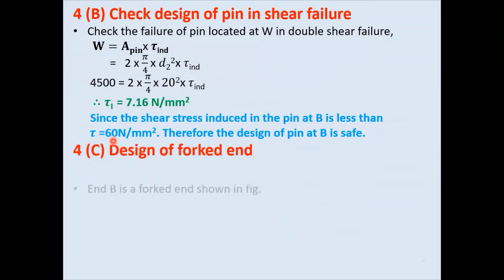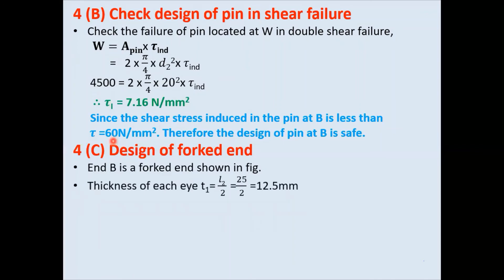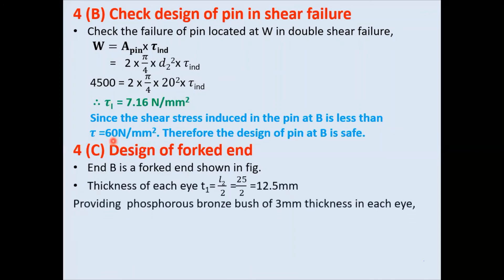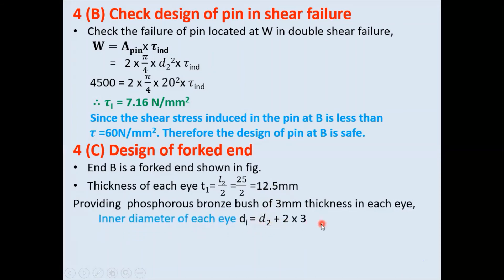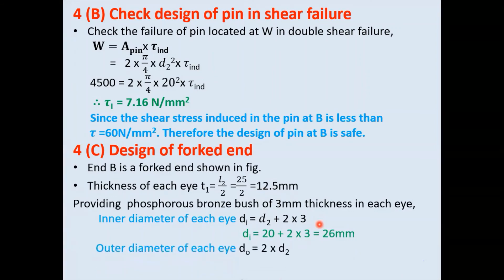Step 4c: design of forged end. Provide a phosphorous bronze bush of 3 mm thickness. Thickness of each eye of the forged end = L2/2 = 12.5 mm. Inner diameter of eye = d2 + 2×3 = 20 + 6 = 26 mm. Outer diameter of eye = 2 × inner diameter = 52 mm, or alternatively 2 × diameter of pin = 40 mm.